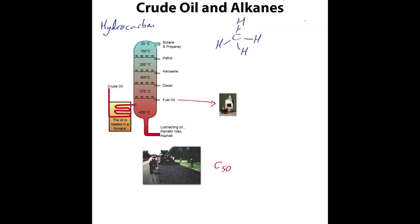Now if we take methane, which is the smallest of the alkane hydrocarbons, it is made up of one carbon plus four hydrogens. That's because carbon likes to have four bonds around it for alkanes. So we have C1H4.